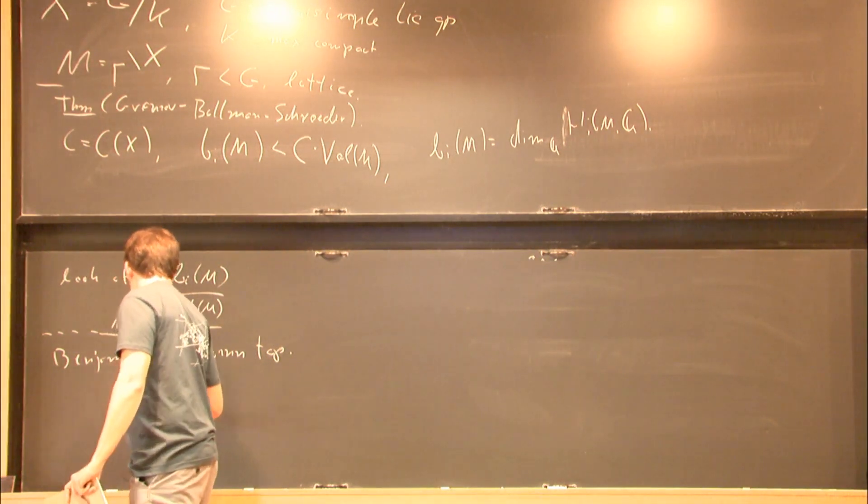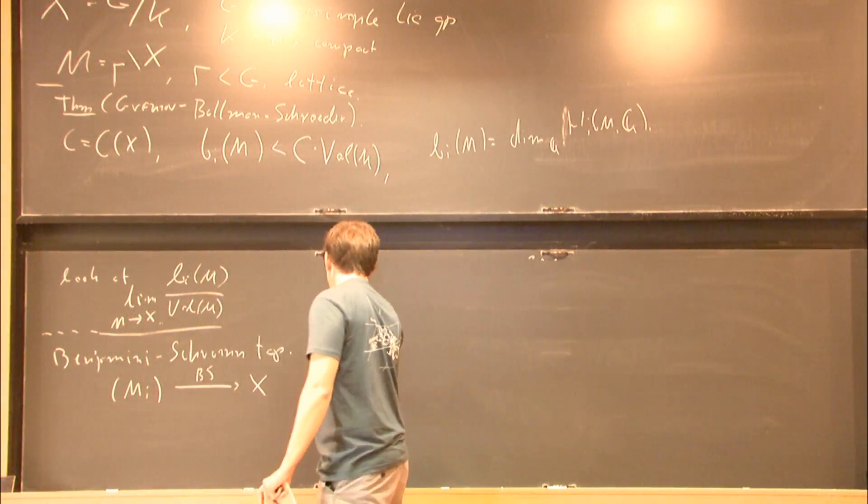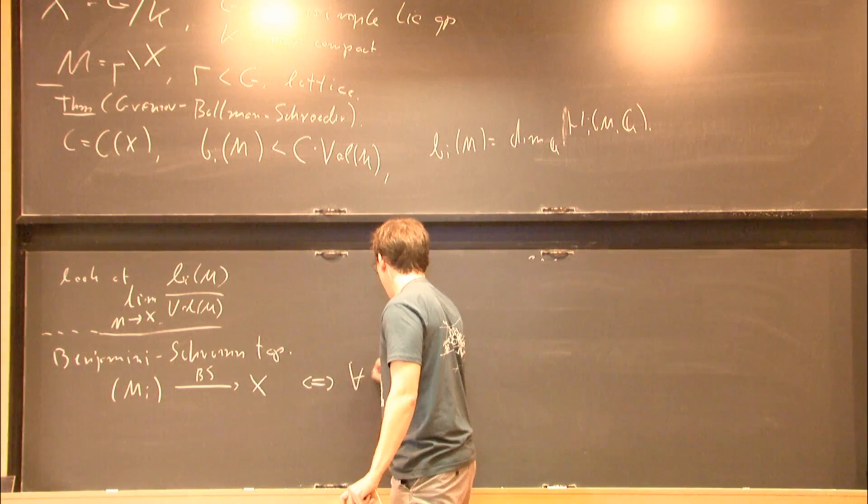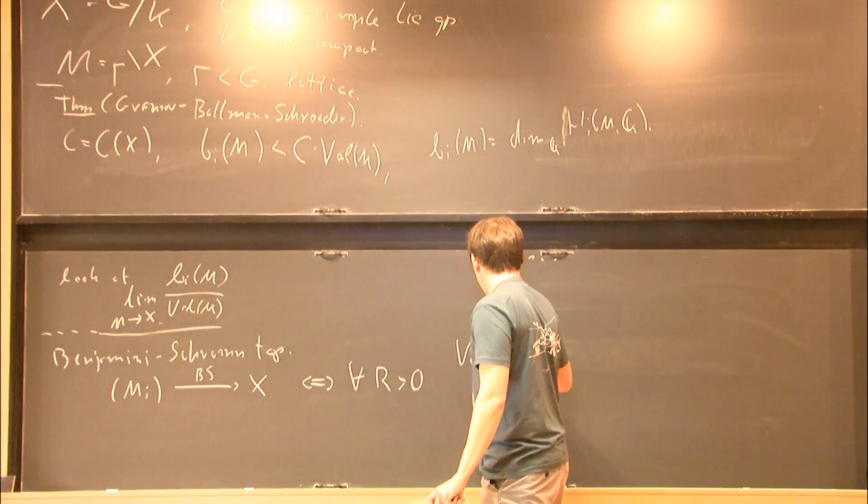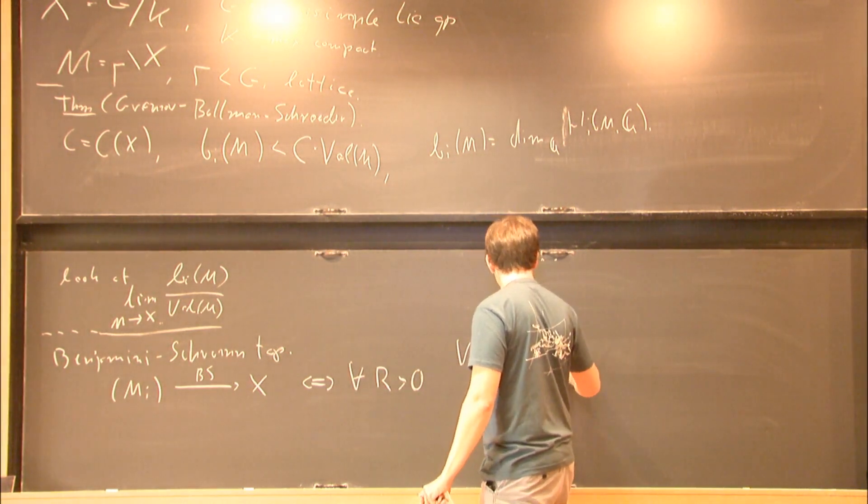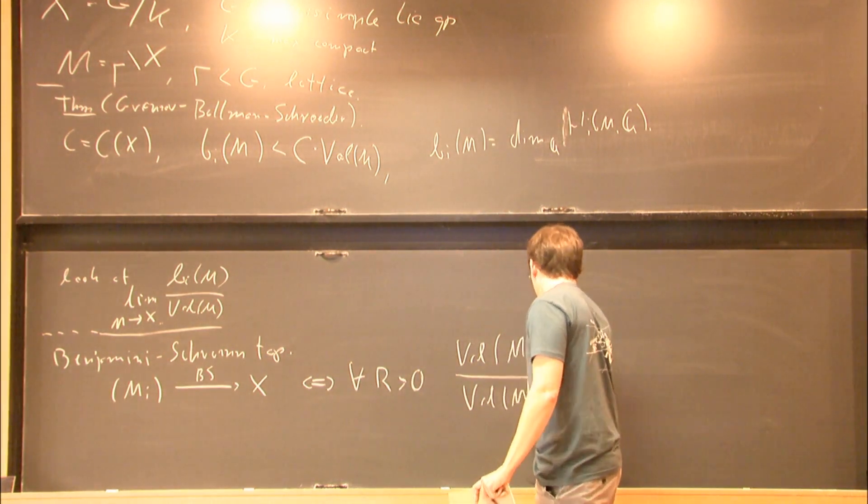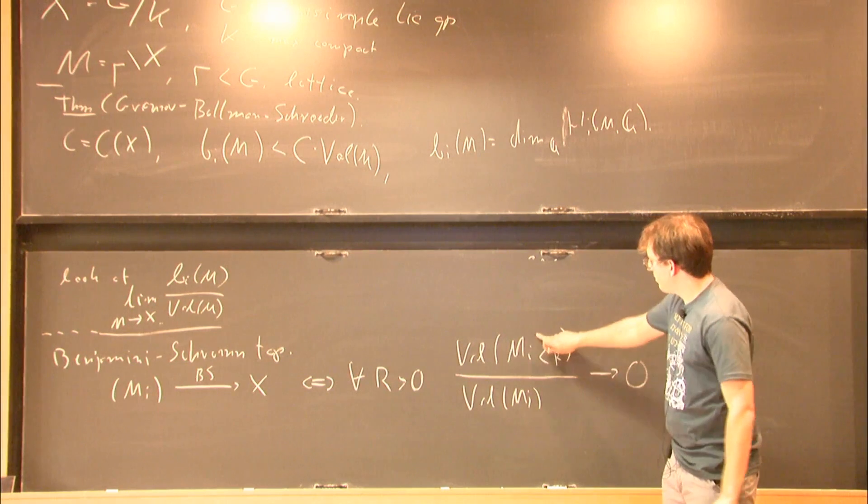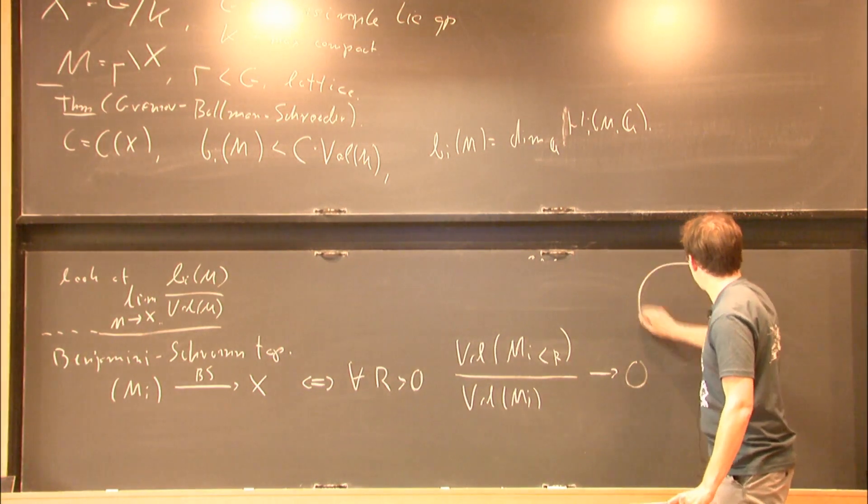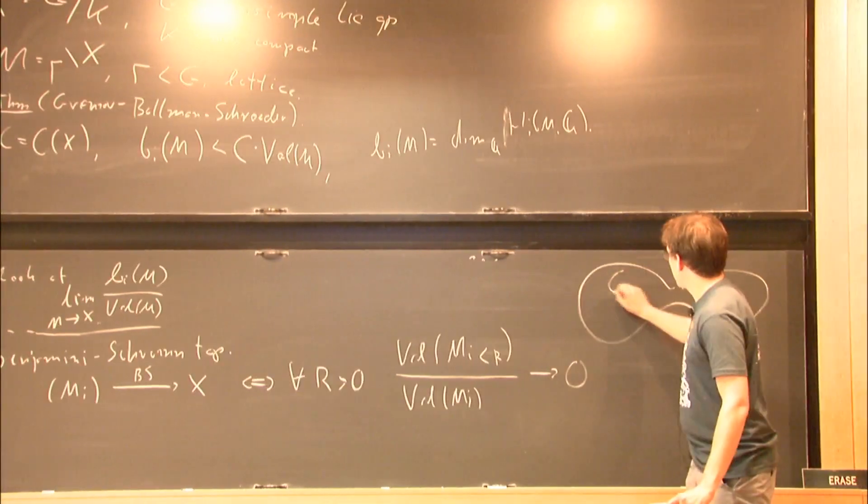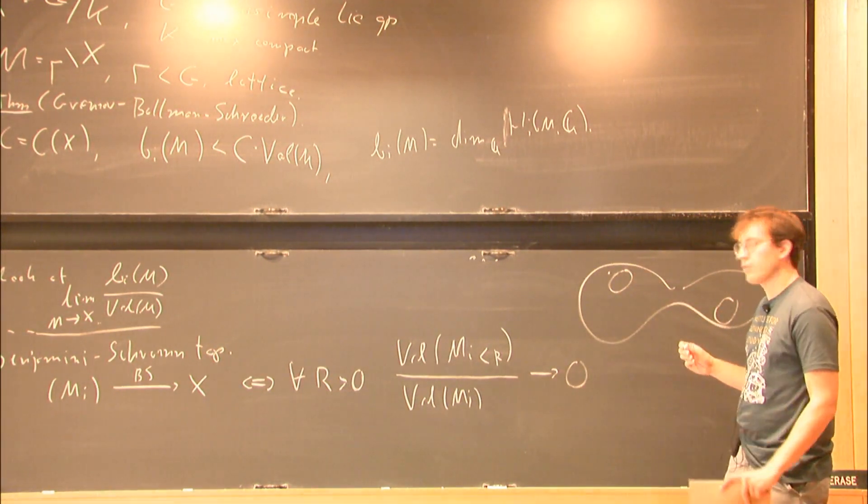I will just define what it means for a sequence of locally symmetric spaces to converge to X. Let's say we have sequence M_i, so it converges to X in Benjamin-Schramm topology if and only if the following holds: for every positive R, the volume of R thin part of M_i divided by volume of M_i goes to zero. And this is the part of the manifold where the injectivity radius is less than R.